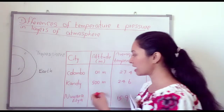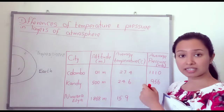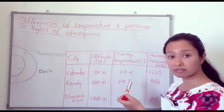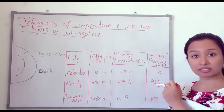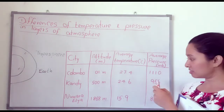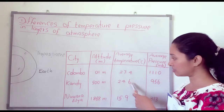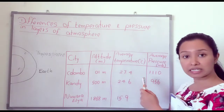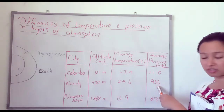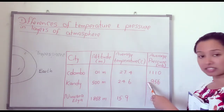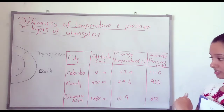Then, coming to the city of Kandy — the altitude has increased to 400 meters. The temperature has decreased to nearly 24°C, and the pressure has also decreased to 956 millibars.